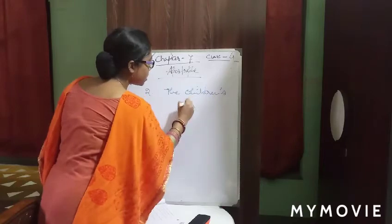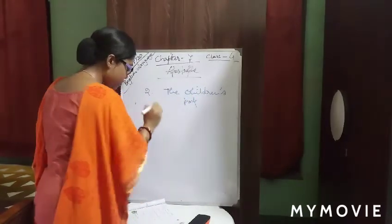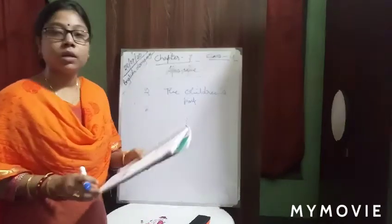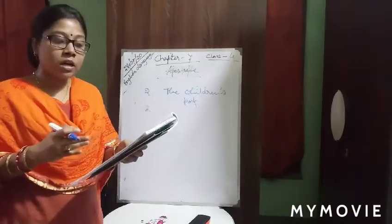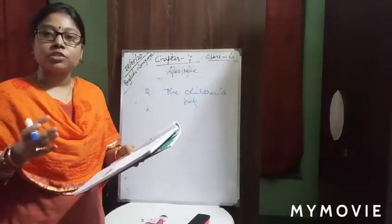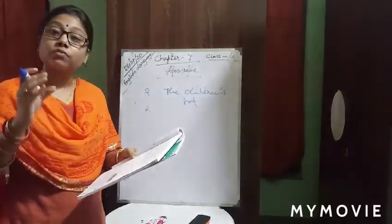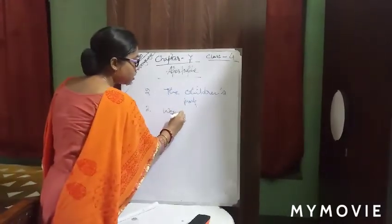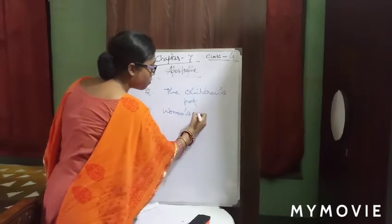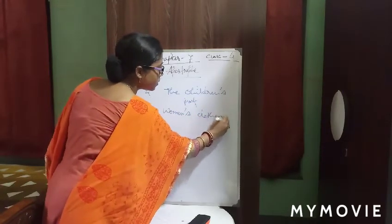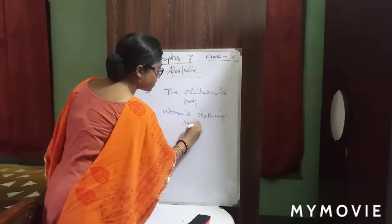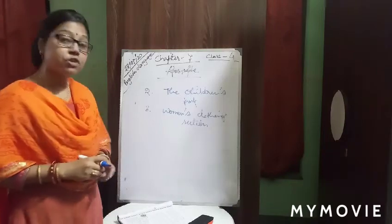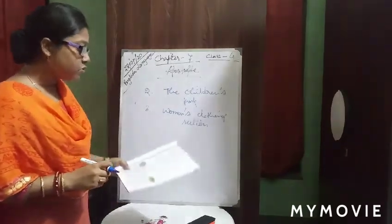Number three: 'Geetika entered the clothing section for women.' So we write 'woman's clothing section.' Woman is also plural and does not end with s, so we write woman's — apostrophe then s. Woman's clothing section.